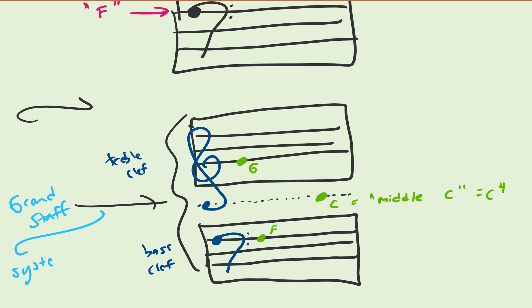Putting these two together creates what we call a grand staff. A grand staff is simply just a system of staves. One being a treble, one being a bass clef.